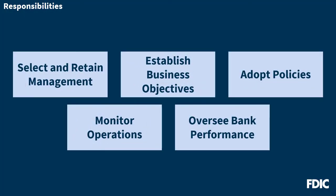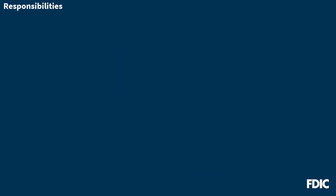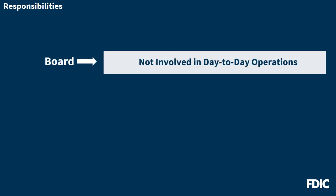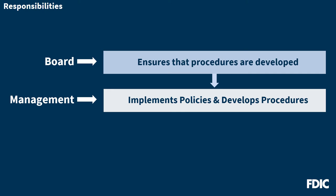Now that we've talked about a board member's individual responsibilities, let's talk about the responsibilities of the board as a whole. The board selects, supervises, and retains qualified senior management, putting in place a management team that both supports the strategic direction of the bank and can appropriately administer day-to-day operations. Board members don't need to be involved in the day-to-day operations. The board's role is to establish clear policies and guidance regarding acceptable risk exposure levels, while senior management is responsible for implementing those policies and developing procedures that translate the board's goals, objectives, and risk limits into operating practices.